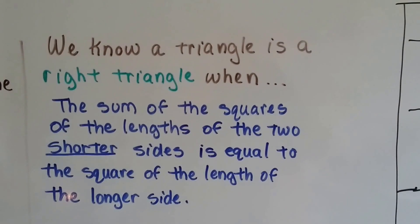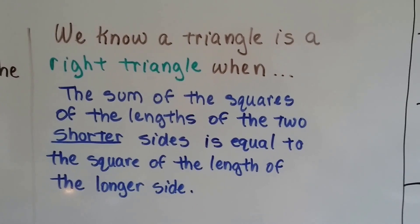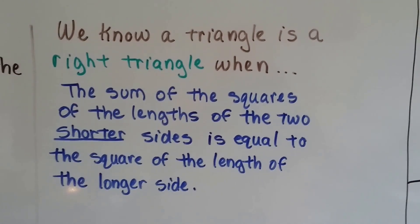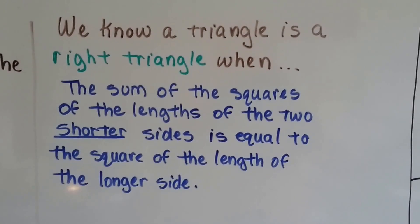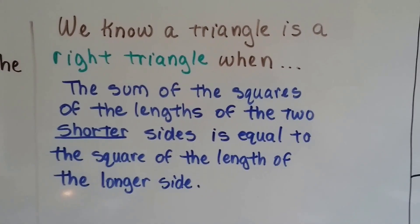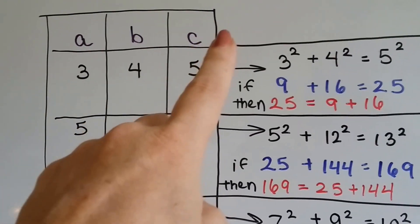Alright, so we know a triangle is a right triangle when the sum of the squares of the lengths of the two shorter sides, the two legs, is equal to the square of the length of the longer side, the hypotenuse. A squared plus b squared equals c squared. So let's take a look at this chart. We've got our values for a, b, and c.